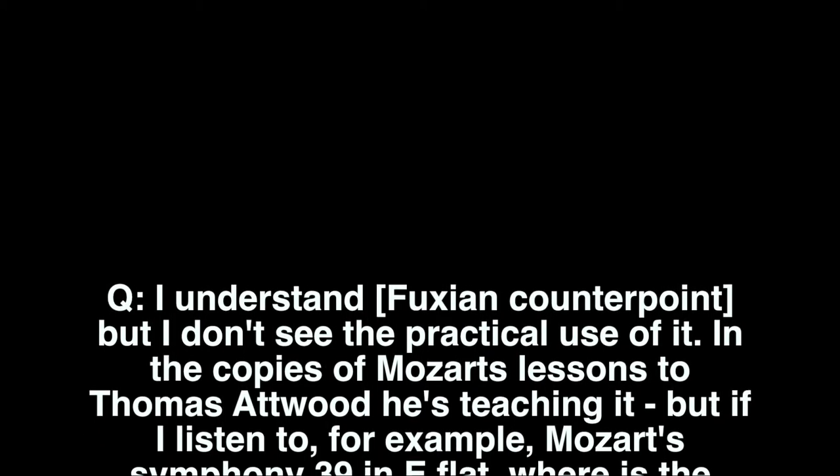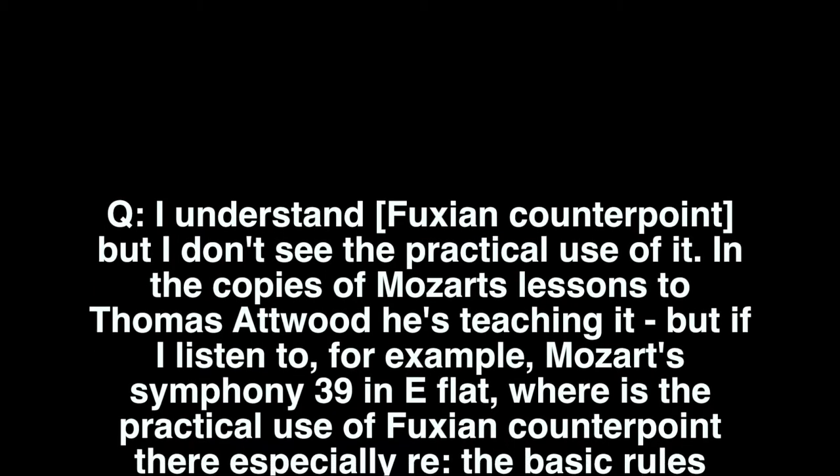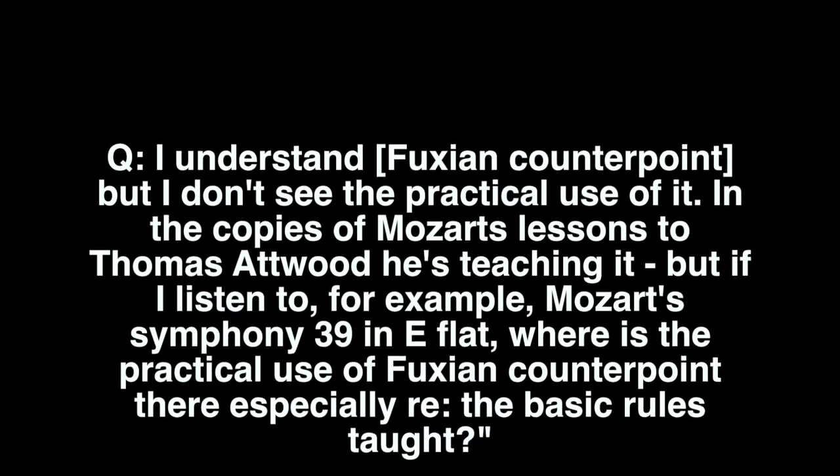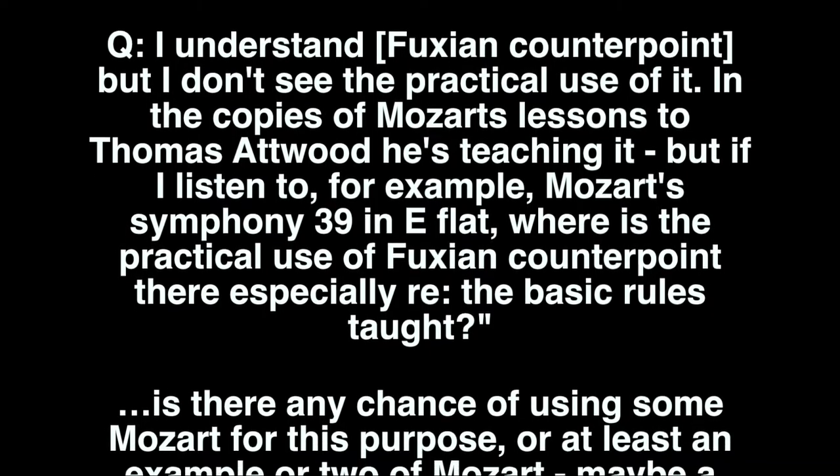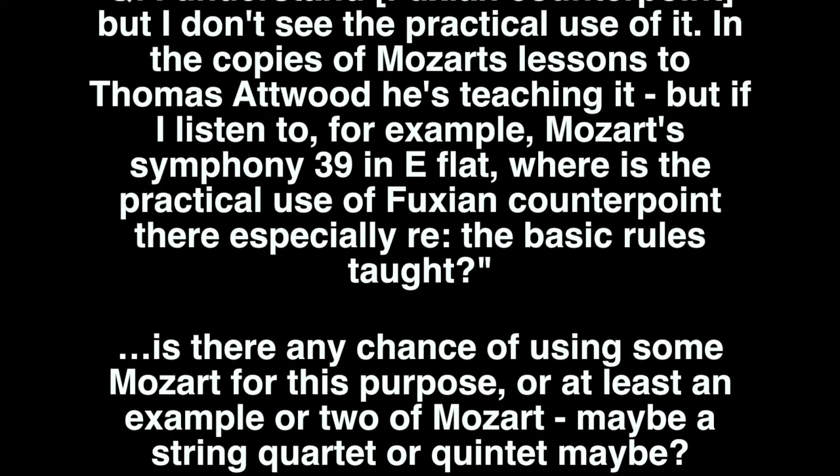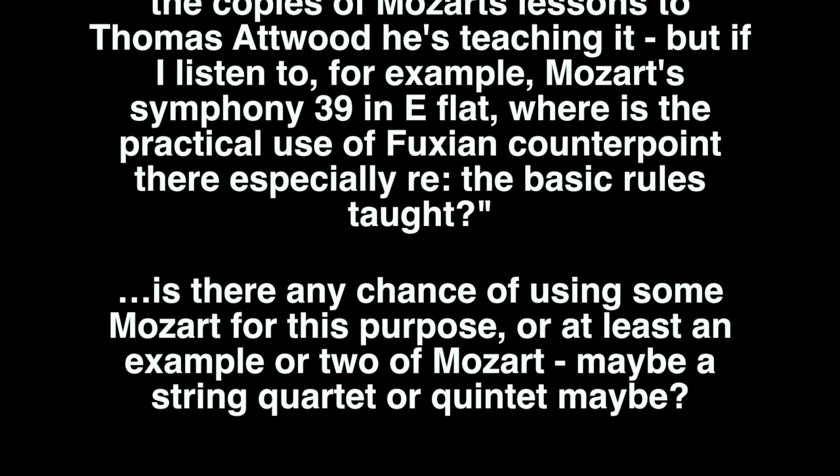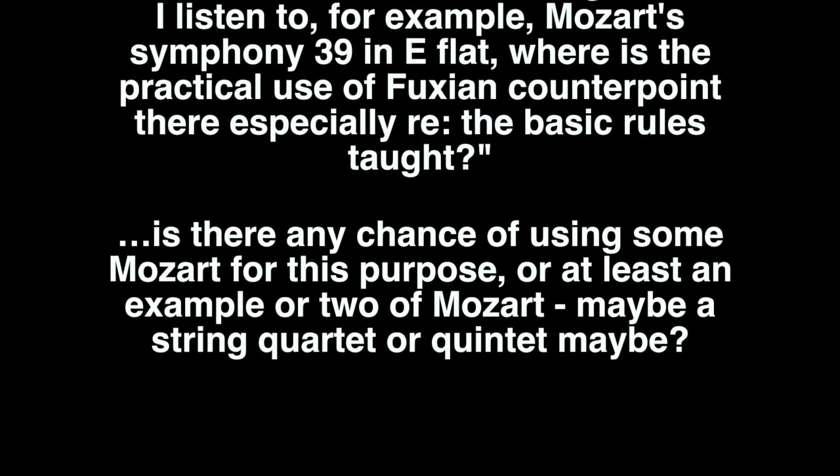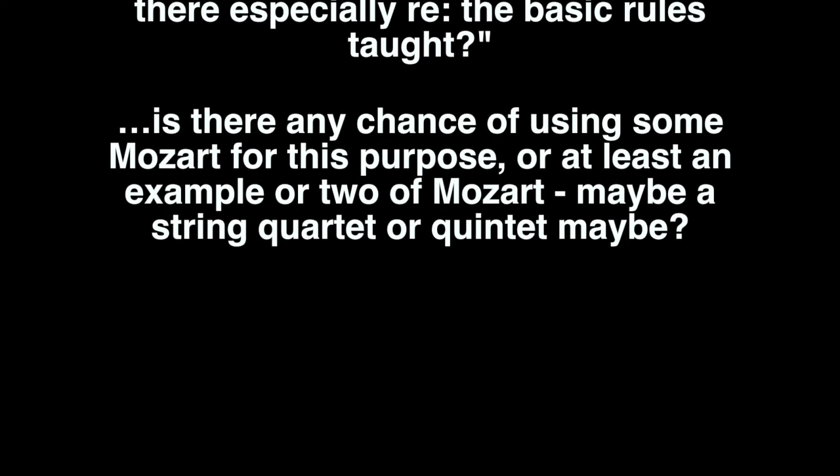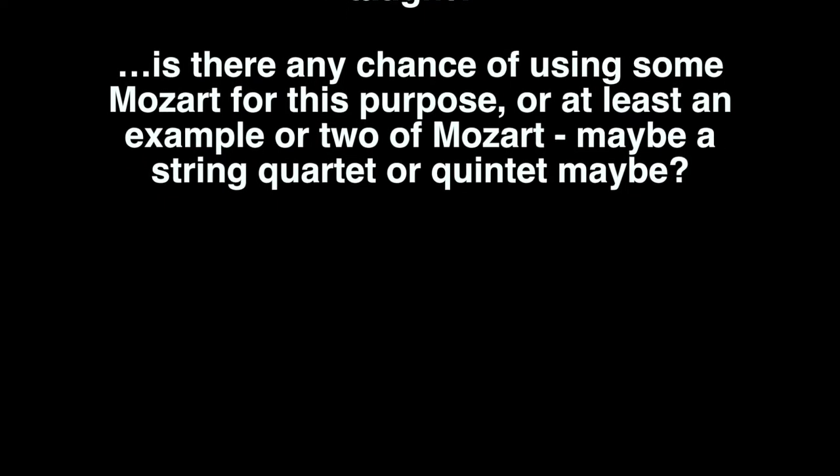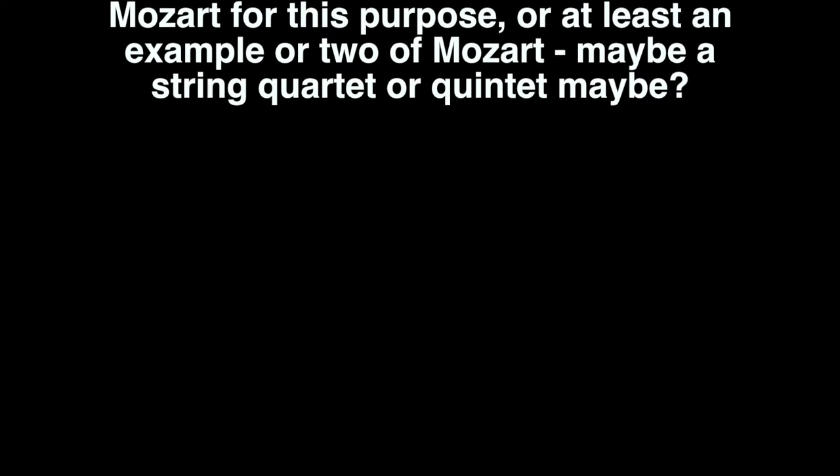In the copies of Mozart's Lessons to Thomas Atwood, he's teaching it. But if I listen to, for example, Mozart's Symphony 39 in E-flat, where is the practical use of Fuchsian counterpoint there? Especially the basic rules taught. There was a follow-up comment asking, is there any chance of using some Mozart for this purpose, or at least an example or two of Mozart, maybe a string quartet or quintet maybe?